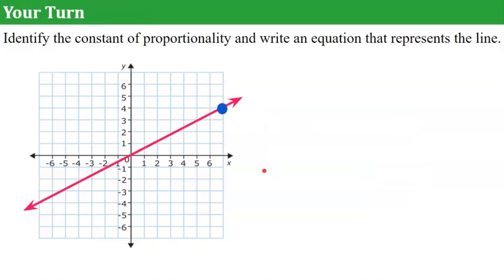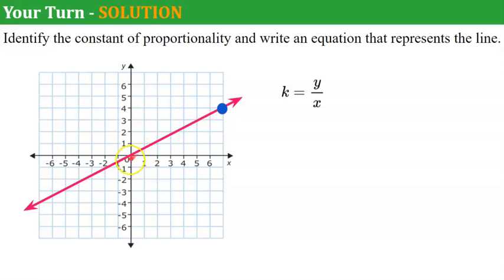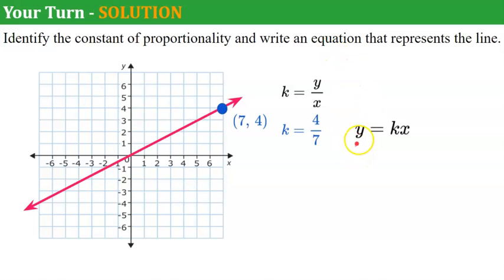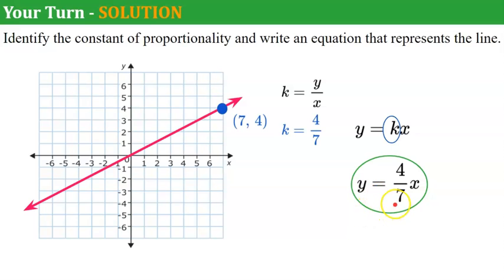Now it's your turn — identify the constant of proportionality and write the equation that represents the line. Pause and come back when you're done. Welcome back. K is a ratio of any Y coordinate over the X coordinate for a point on a proportional line. This line passes through the origin, confirming it's proportional. The ordered pair on the line is (7, 4), so K equals 4 sevenths. The equation of the line is Y equals 4 sevenths X.